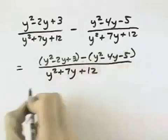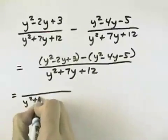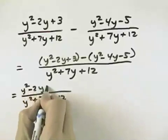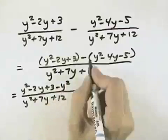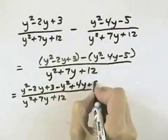We need to distribute this negative sign through. So over our common denominator, we have y² - 2y + 3, but now we have minus y², minus a negative is plus 4y, and minus a negative is plus 5.